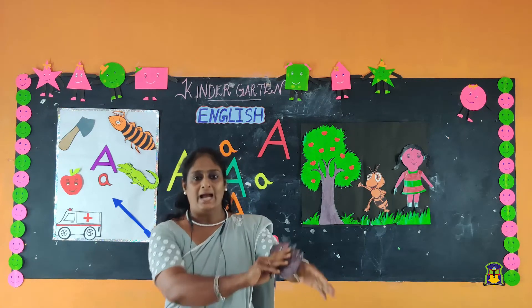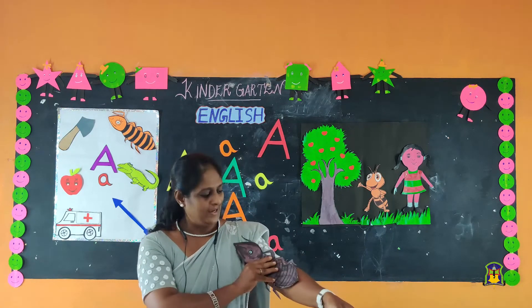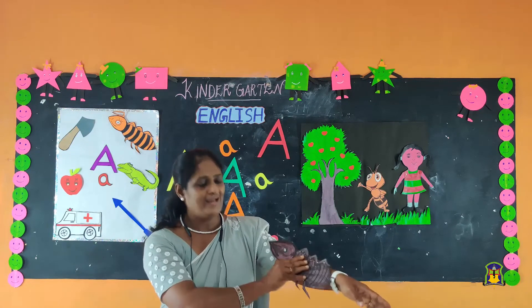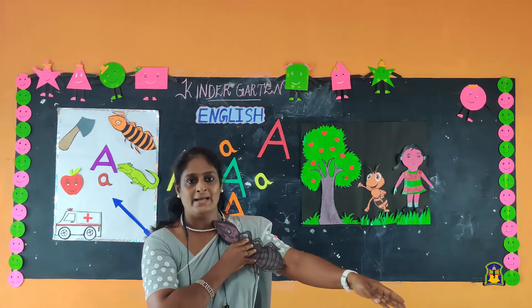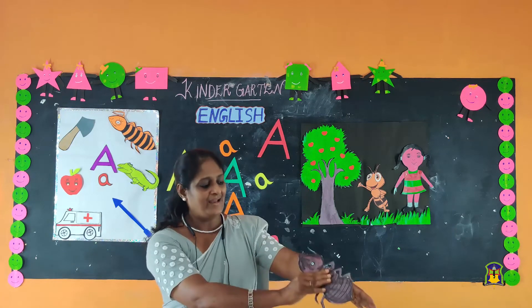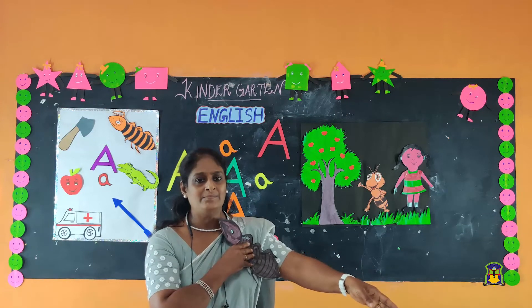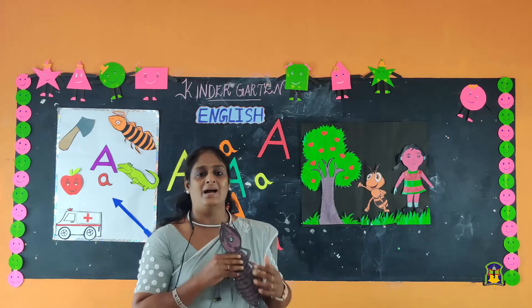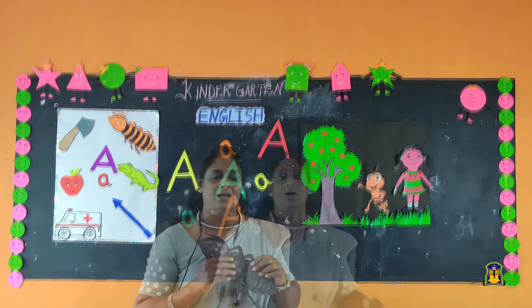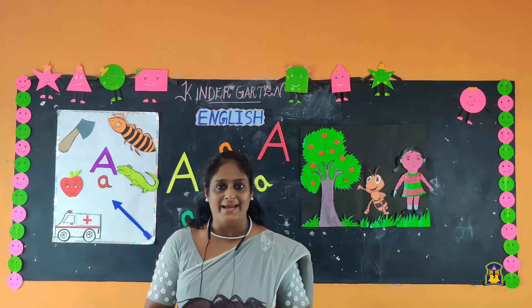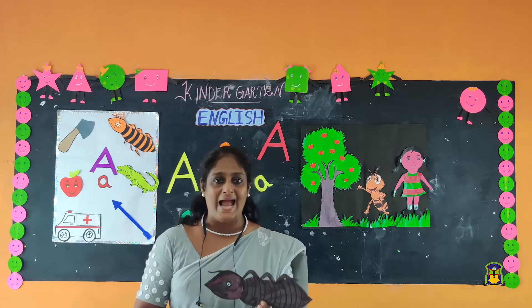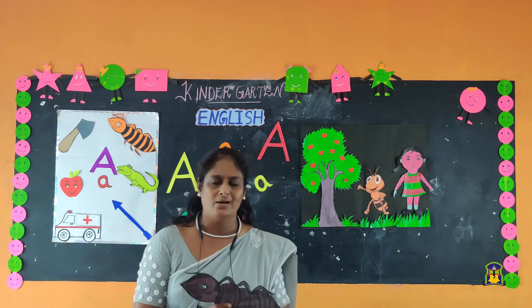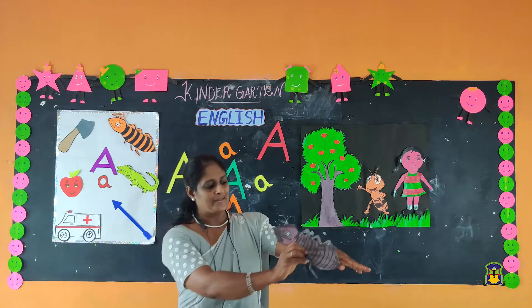Ah, ah, hands on my hand. Ah, ah, hands on my hand. Ah, ah, hands on my hand. What sound does A say? Ah, ah. Okay, shall we sing once again?